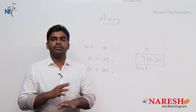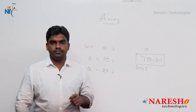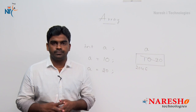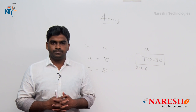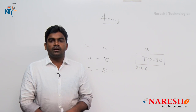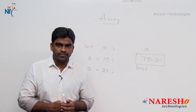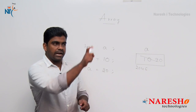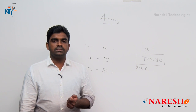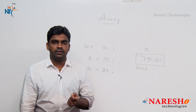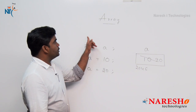Multiple values we cannot store — that is an impossible case. This is the main disadvantage of a primitive data type. If I want to store more than one element — for example, student marks, mobile numbers, employee numbers, or student IDs — and if there are 100 students, we would have to declare 100 variables. That is impossible and very complex. Declaration of 100 variables and working with them individually is a very complex task. That is why they introduced the concept of arrays.